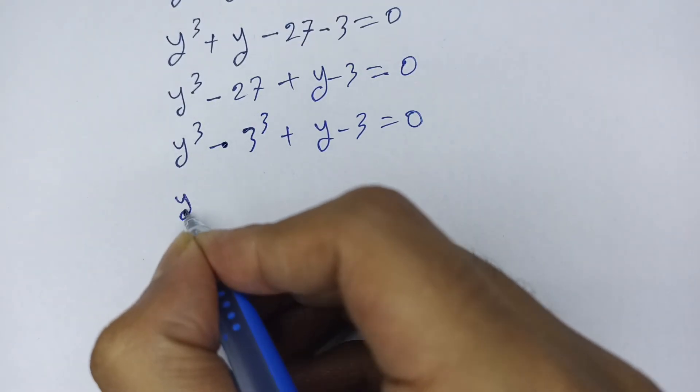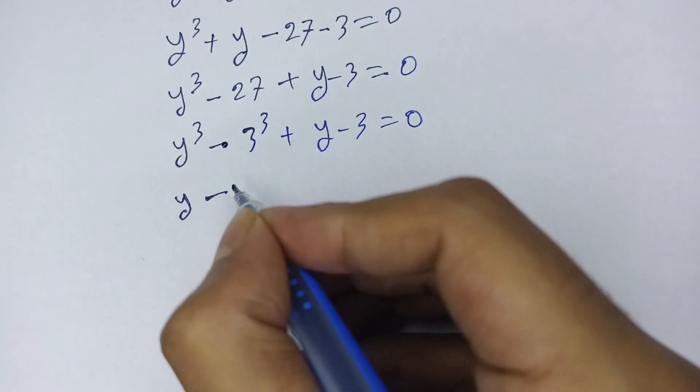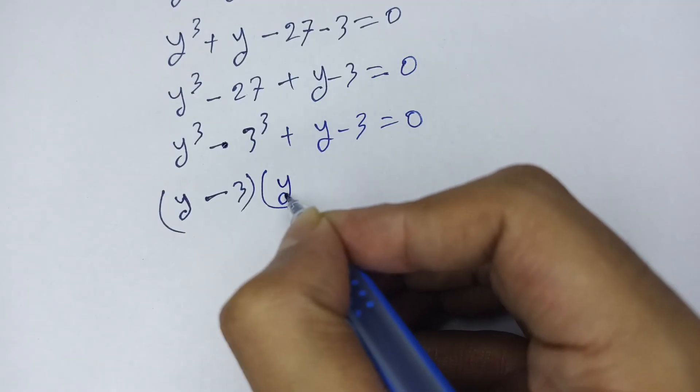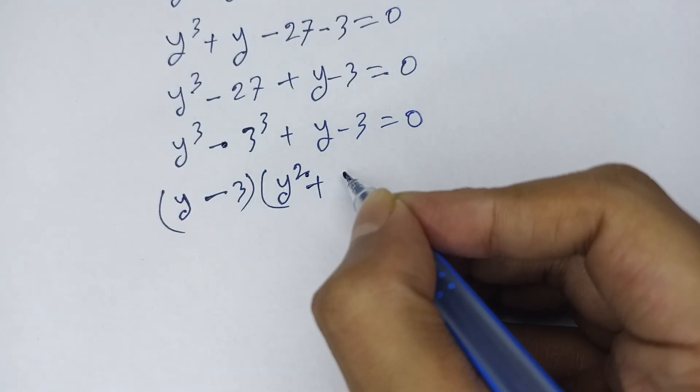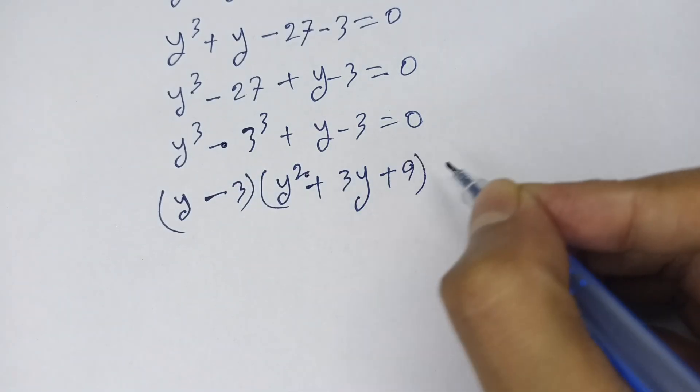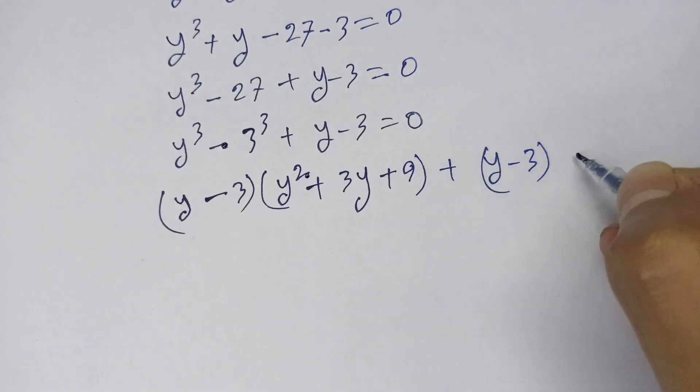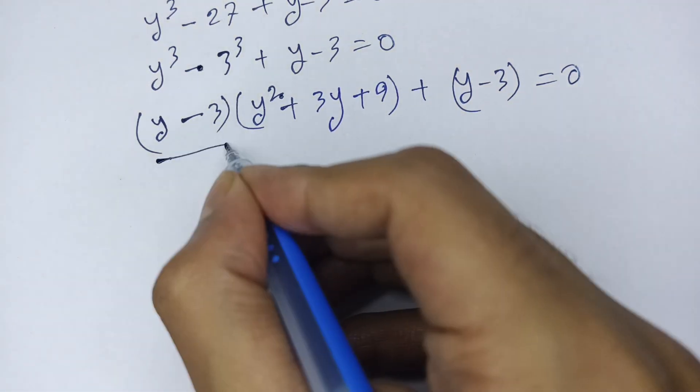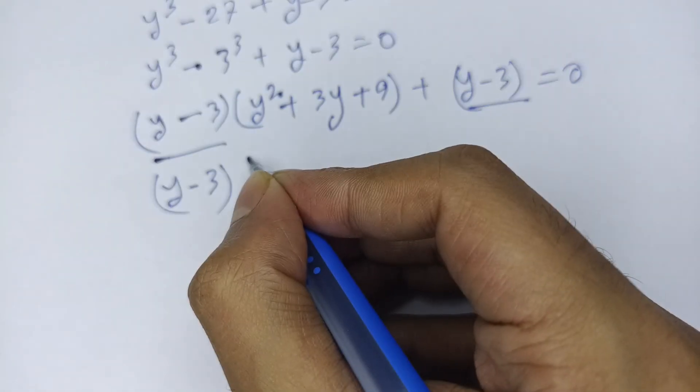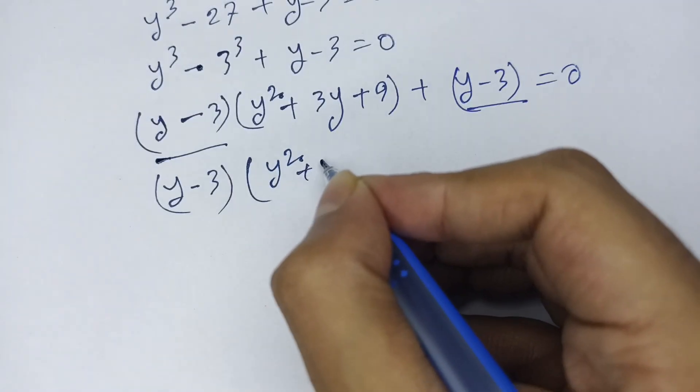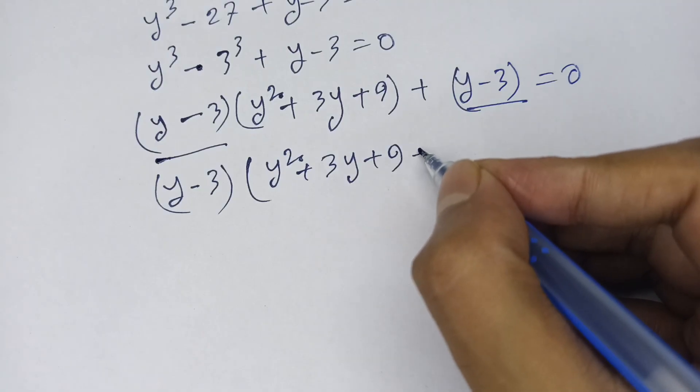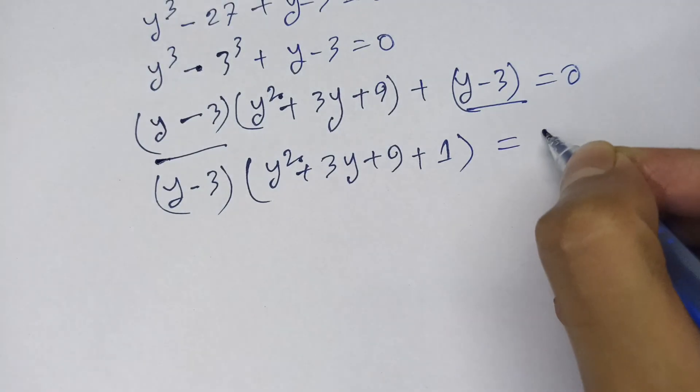Then I use a cubed minus b cubed formula, so y minus 3 times y squared plus 3y plus 9 plus y minus 3. This factors to y minus 3 times y squared plus 3y plus 10 equals 0.